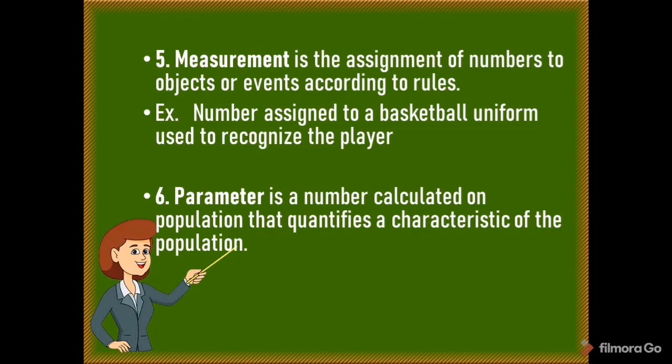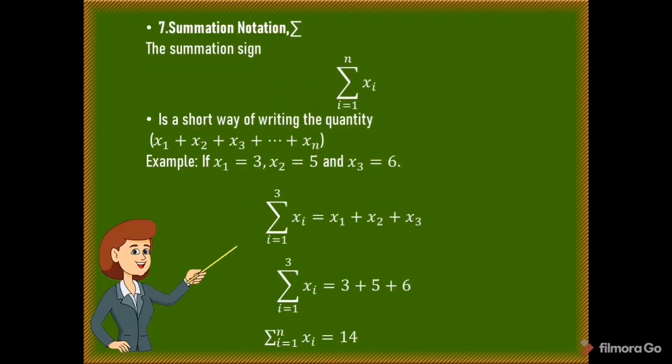The fifth term is measurement. Measurement is the assignment of numbers to objects or events according to rules. An example is the number assigned to a basketball uniform used to recognize the player. The sixth term is parameter. It is a number calculated on a population that quantifies a characteristic of the population. The seventh term is the summation notation. The summation of x sub i from i equals 1 to n is a short way of writing x₁ + x₂ + x₃ + ... + xₙ.